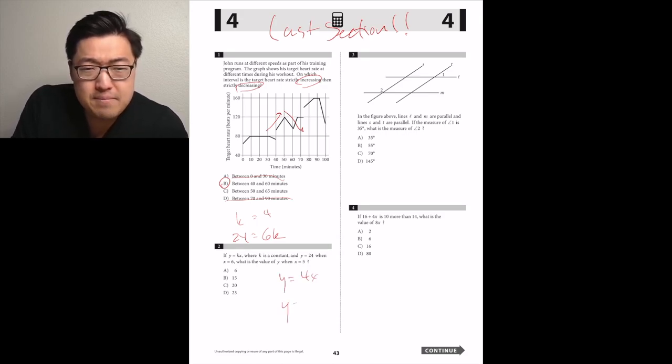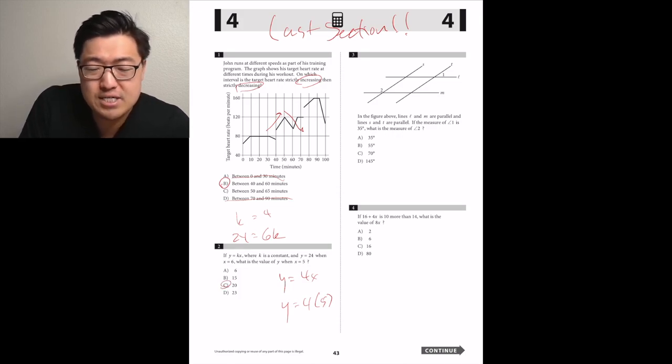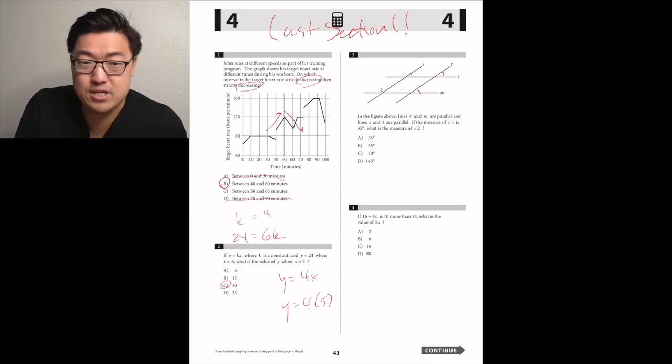Number three, in the figure above, lines L and M are parallel. Lines S and T are parallel. If the measure of angle 1 is 35, what's the measure of angle 2? They're going to be supplementary, like add up to 180. So D.